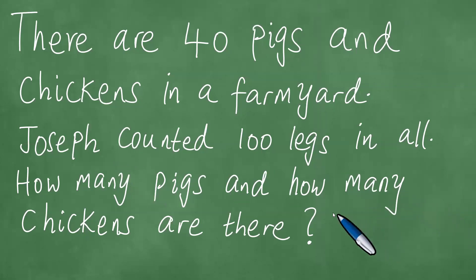In this lesson, we shall proceed to solve this word problem in front of us. There are 40 pigs and chickens in a farmyard. Joseph counted 100 legs in all. How many pigs and how many chickens are there?